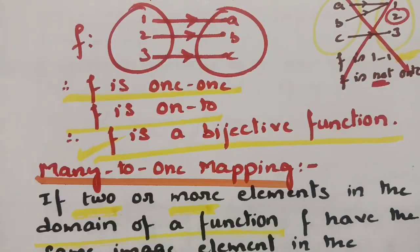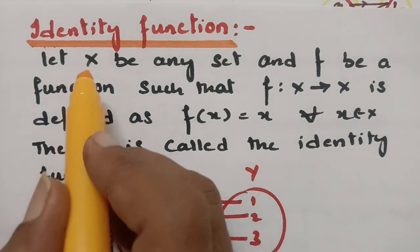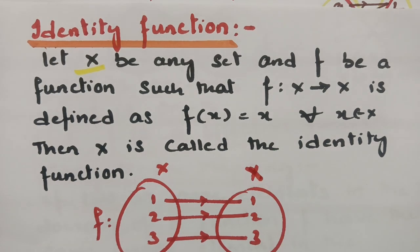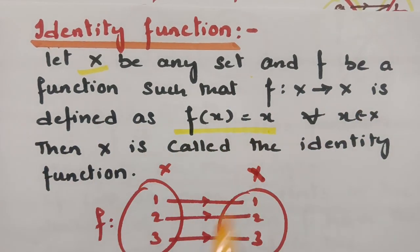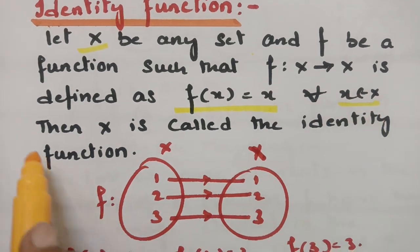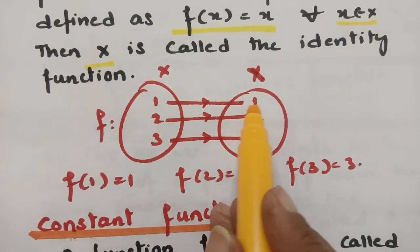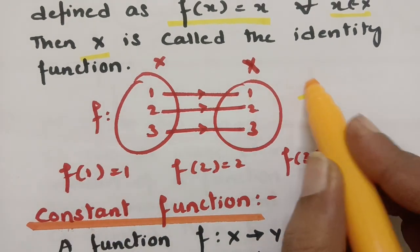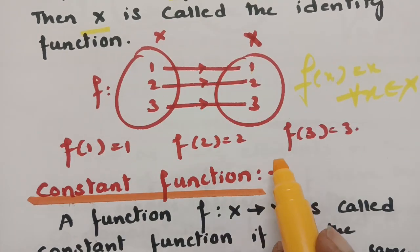Identity function: let x be any set. A function f mapping from x to x is defined as f(x) = x, where x belongs to the set X. For example: f(1) = 1, f(2) = 2, f(3) = 3. This is of the form f(x) = x for every x belonging to X, therefore f is an identity function.